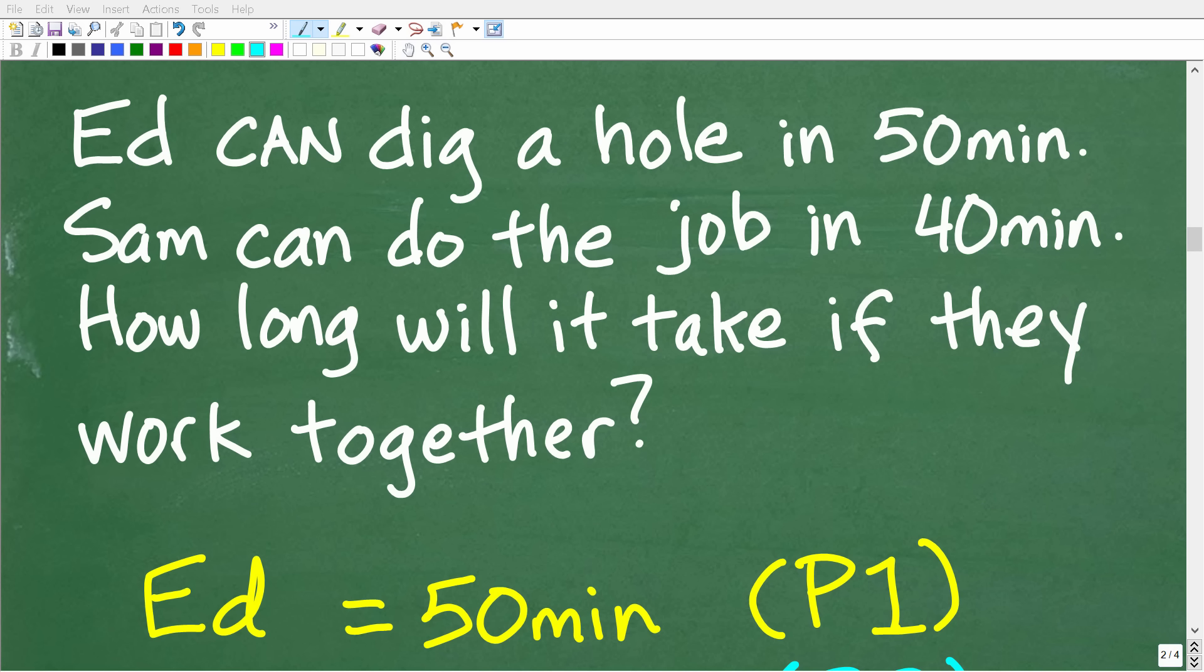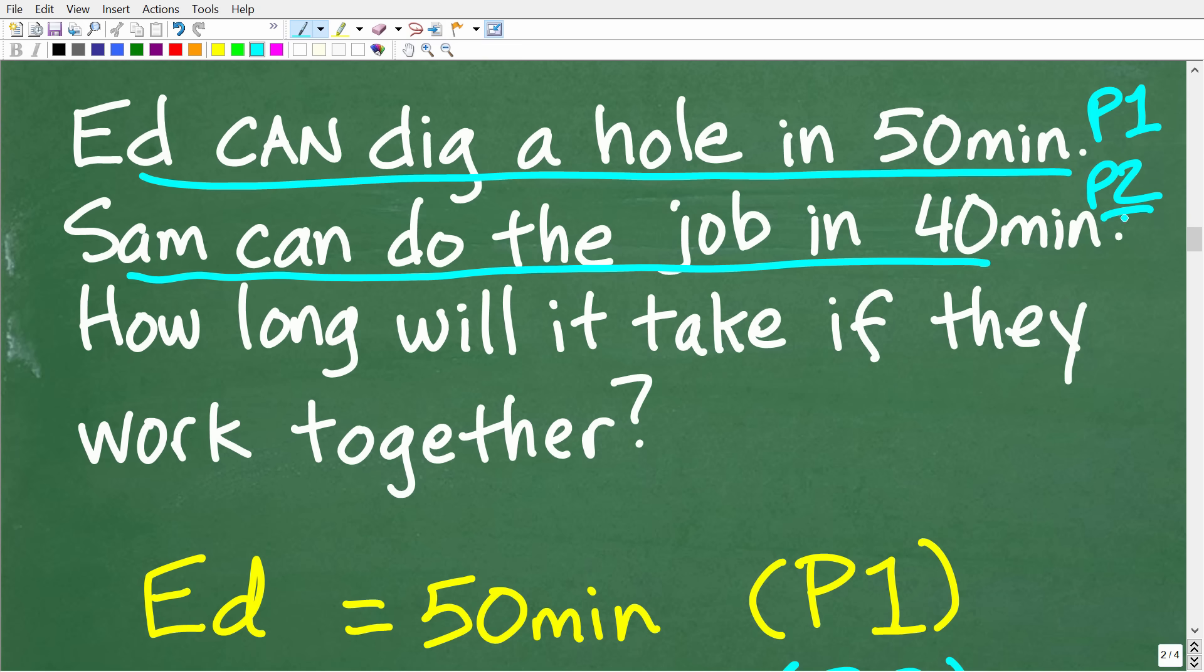So, to apply this formula, we need to go ahead and pull the information from the problem so we can plug it into the formula. Ed can do this job in 50 minutes, i.e. dig a hole. So, maybe we'll call this P1, the time it takes person one to do this job. Now, Sam can do the same job in 40 minutes. So, we'll call this person two time. So, we'll assign P1 as 50 minutes and P2 as 40 minutes.